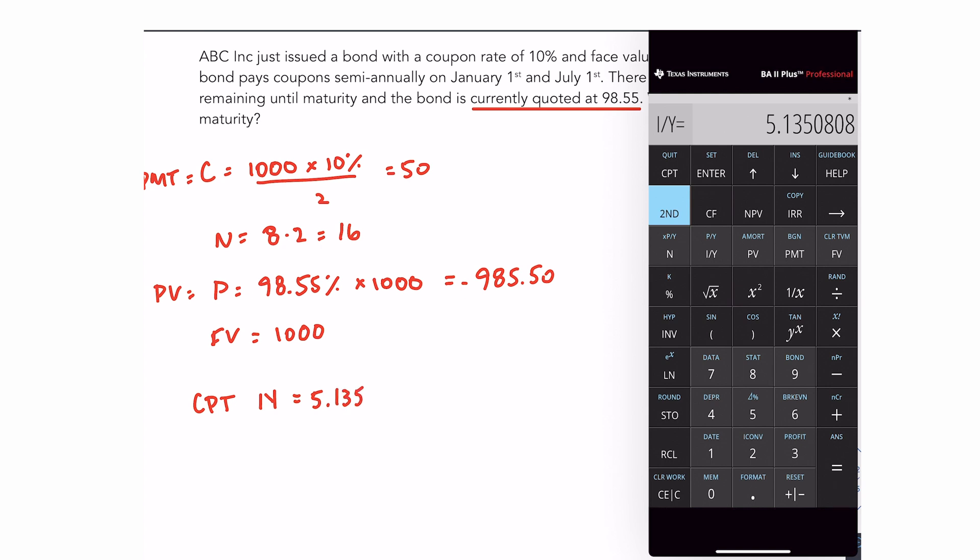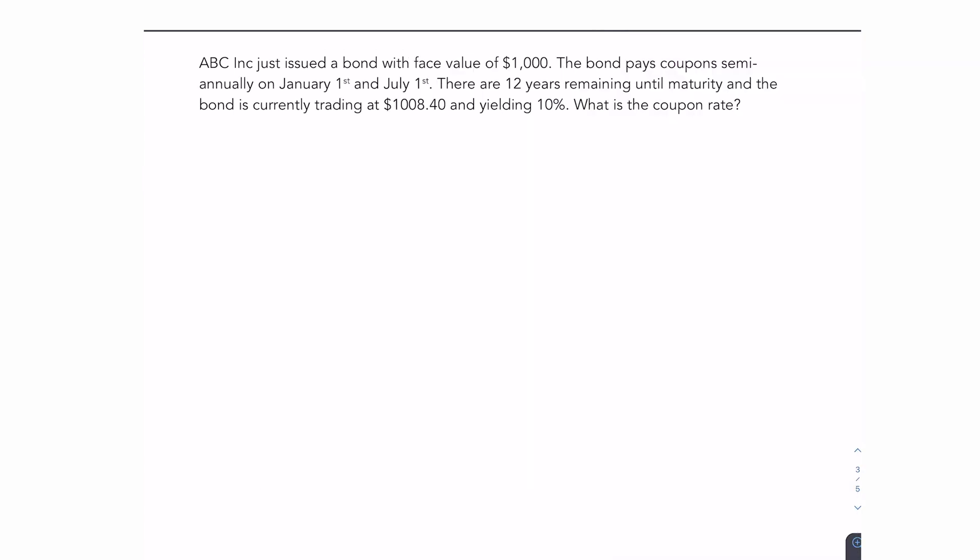Now we aren't done. Because we set our N to 16 to account for the semi-annual payments, you have to remember that this now is a semi-annual rate. The yield to maturity would be what you get when you multiply that by two. So the yield to maturity is actually 10.27%.